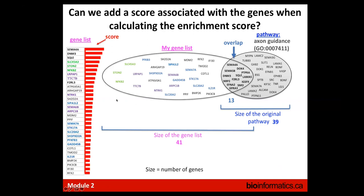In addition to the simple concept of overlap, we can also associate a score with the genes when calculating the pathway enrichment score. If genes in the overlap have a high score, that increases the enrichment score for the tested pathway. We can rank all genes in our experiment using a scoring system — for RNA-seq data that could be the differential gene expression value, and for ChIP-seq and ATAC-seq that could be the p-value associated with the peaks.